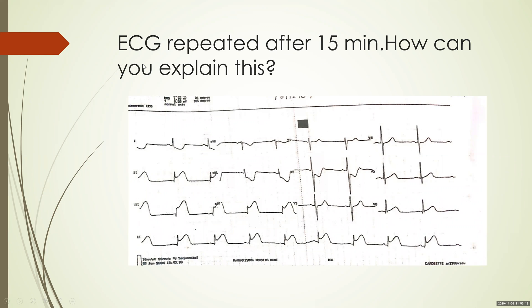When in doubt, always repeat the ECG. If you have doubt about what is going on, take another ECG — you will often get the answer from that. A repeated ECG now shows ST elevation in leads 2, 3, and aVF. The lateral wall MI changes have disappeared; instead, you have ST elevations in 2, 3, and aVF with reciprocal changes in 1 and aVL — this is again an inferior wall MI.